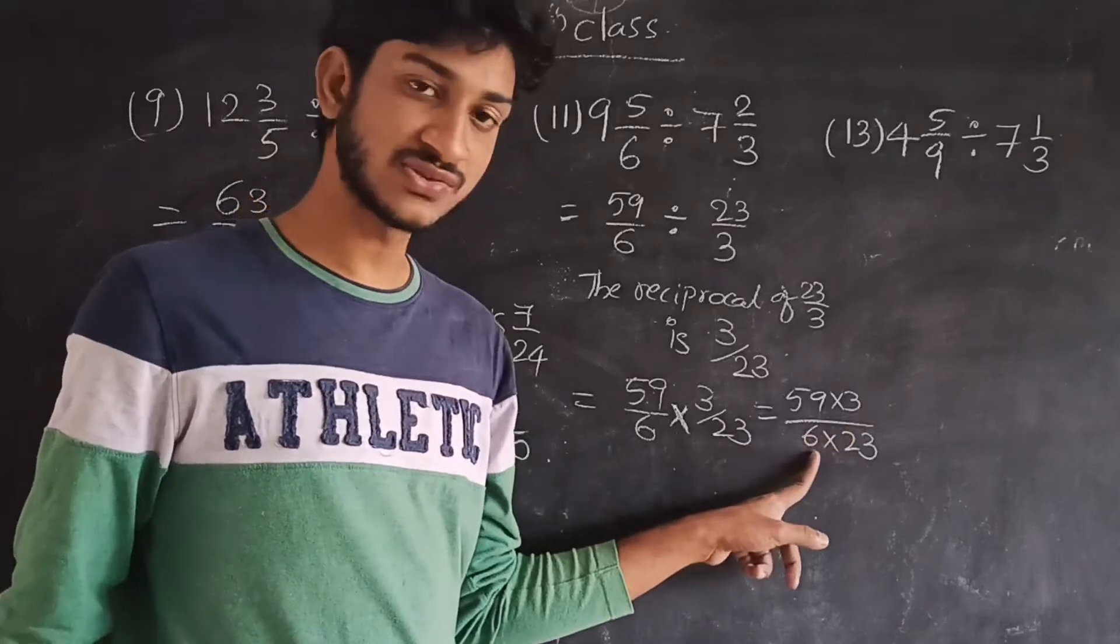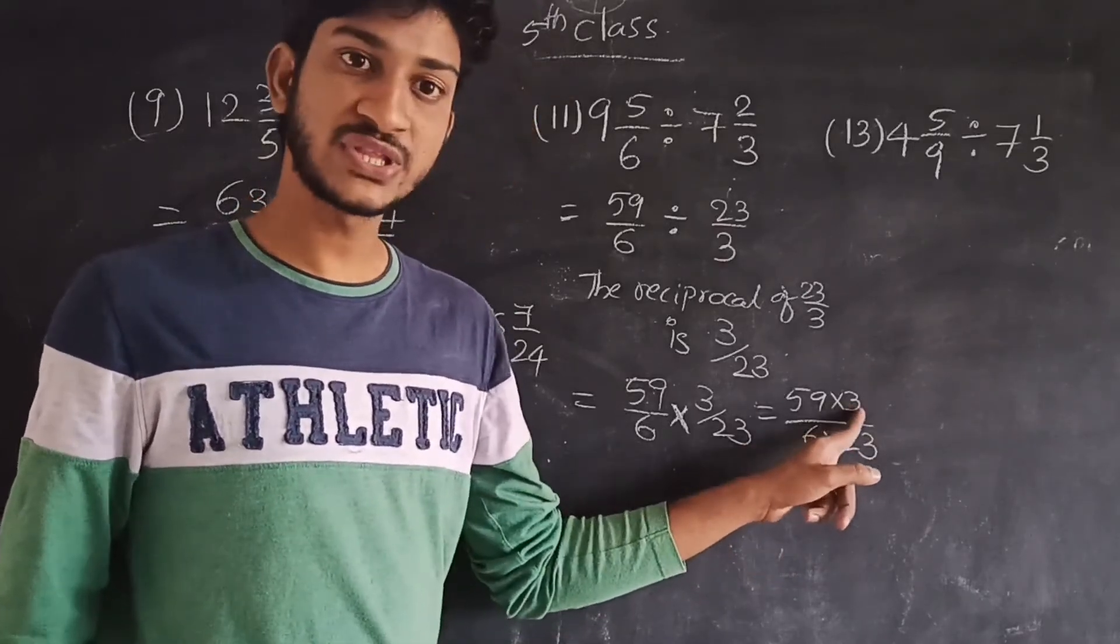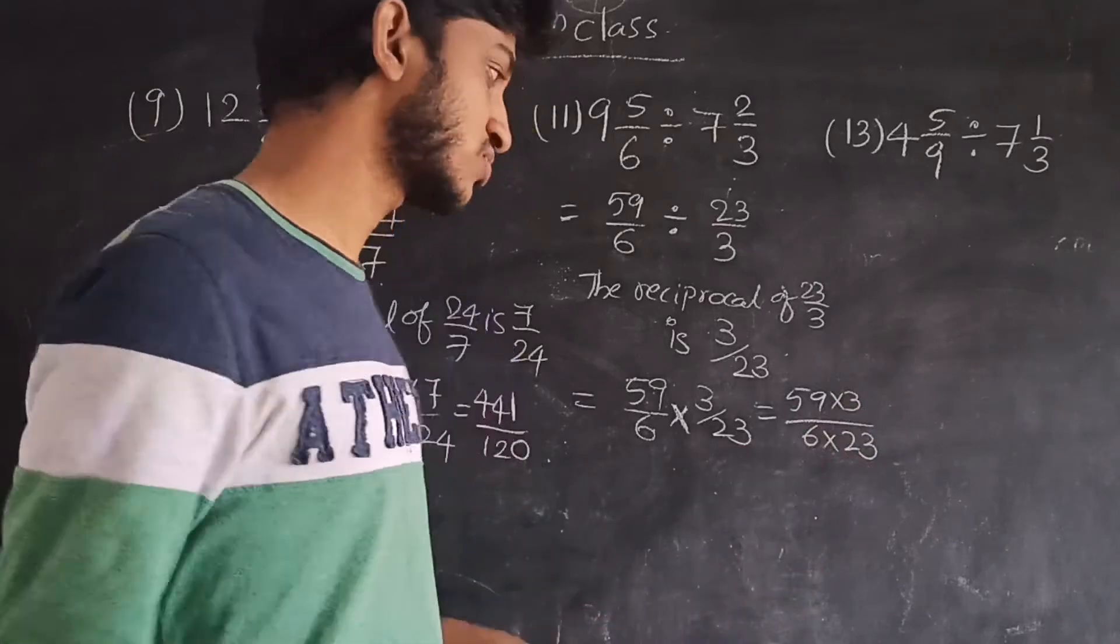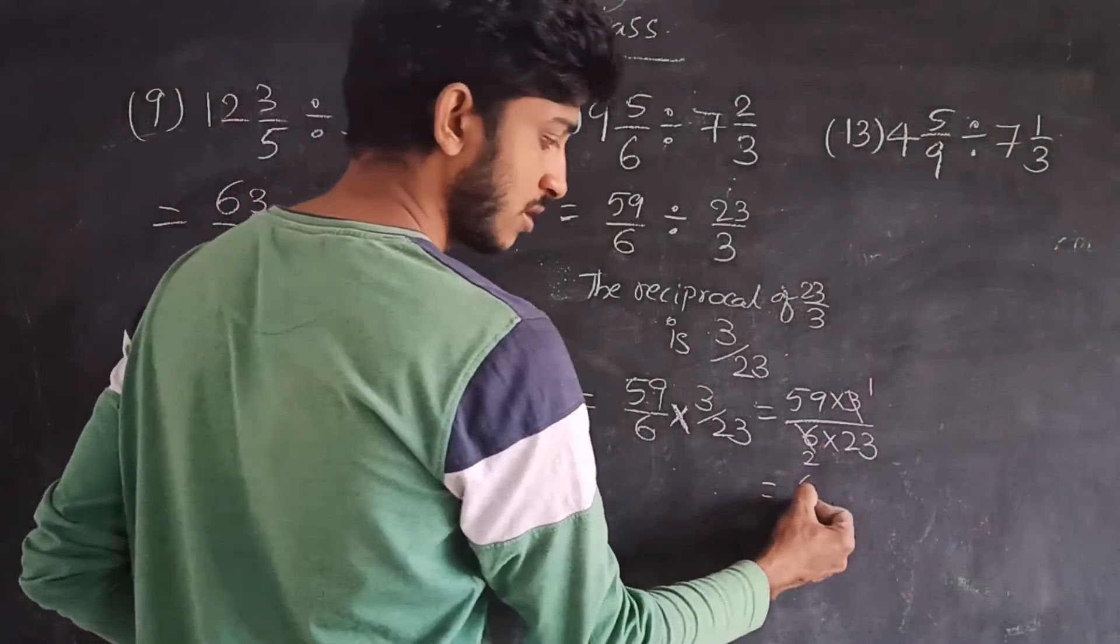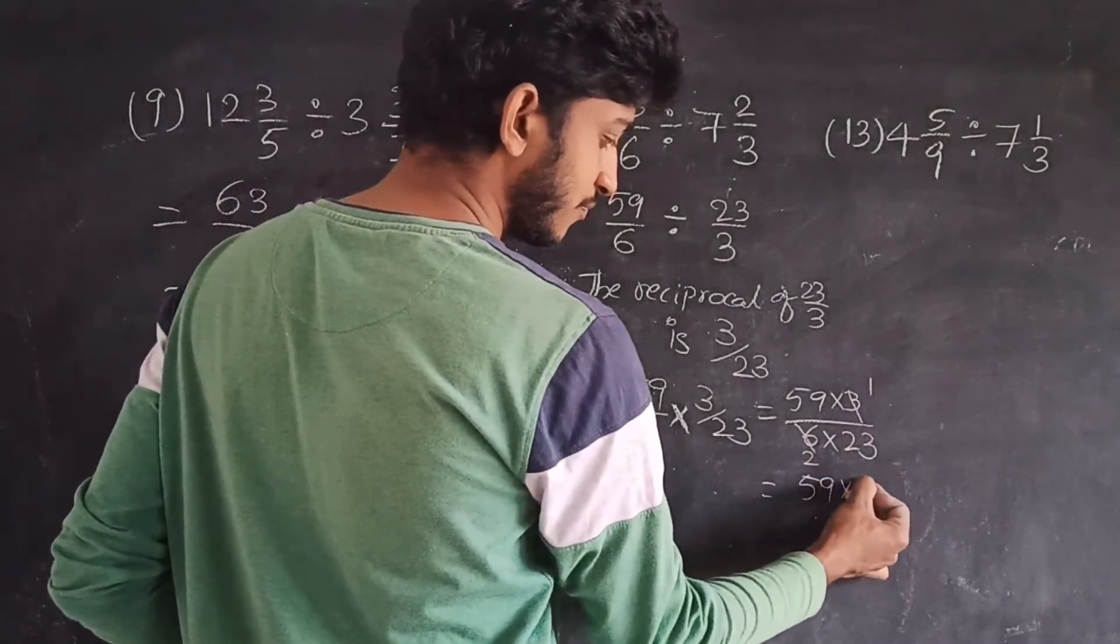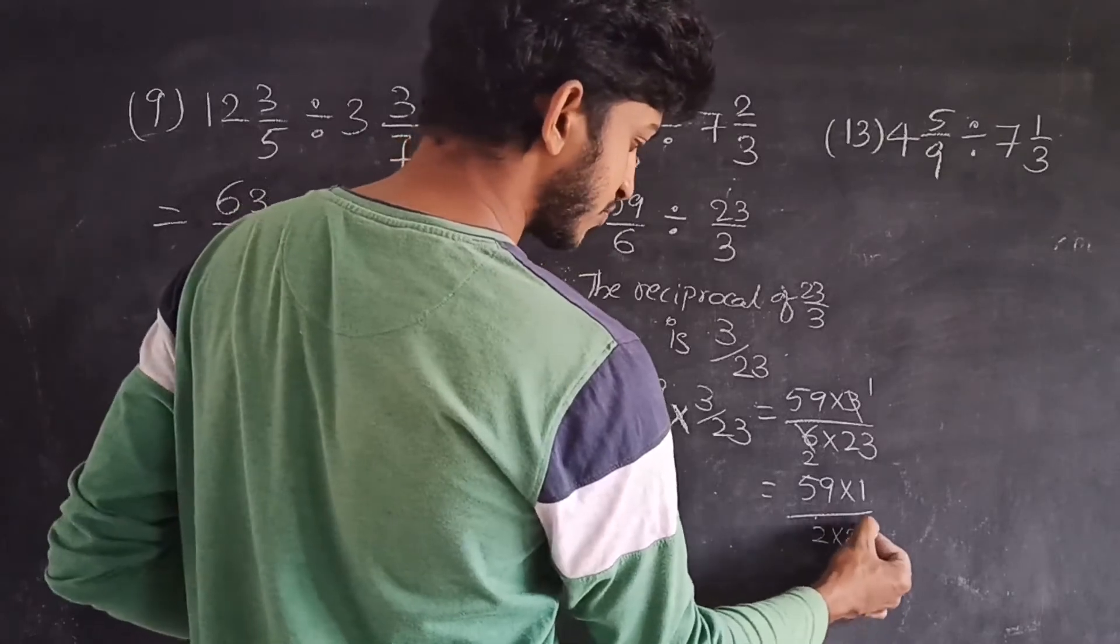3 and 6: 3 table 1 time and 6 is 2 times. So same table, 1 time and 2 times. So 59 into 1 by 2 into 23.